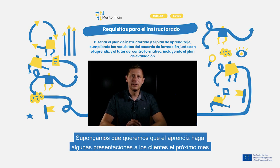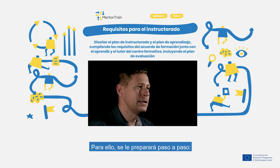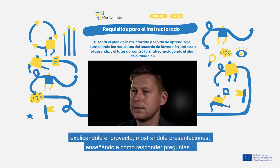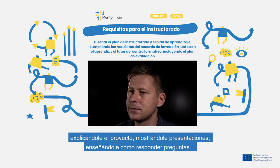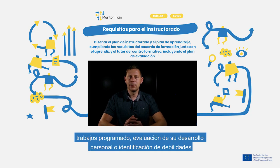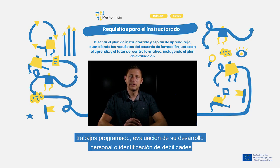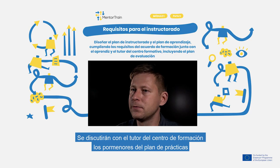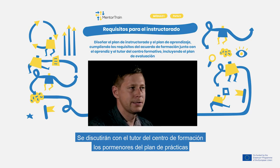For example, we want our apprentice to do a presentation for a client next month. This means we have to prepare the apprentice for that step by step: introducing the project, explaining how to make good presentations, and how to answer questions. The apprenticeship plan is for the apprentice, where they can see planned work tasks, evaluate their personal development, and bring out weaknesses and strengths. Discussing this information with the mentor, they can make changes or add something into the apprenticeship program.